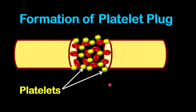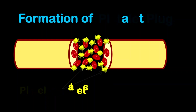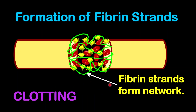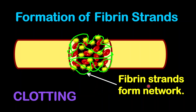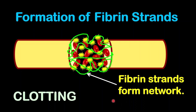The next thing that will take place is that there will be a formation of fibrin strands. Fibrin strands will further reduce the flow of blood outside of the body because the fibrin strands will form a network around that area and further keep the blood within the body.